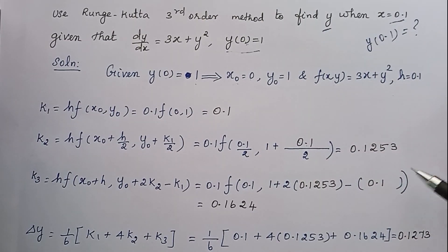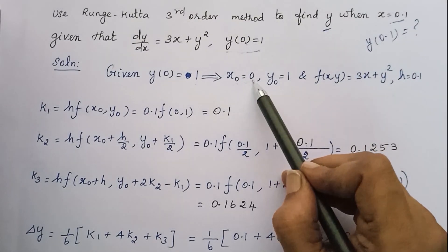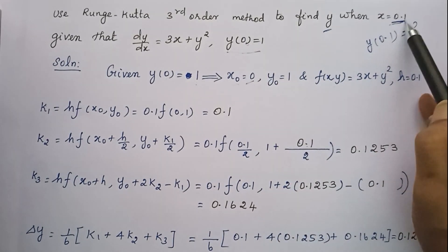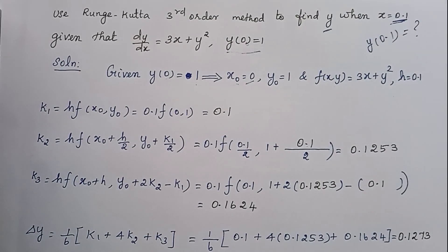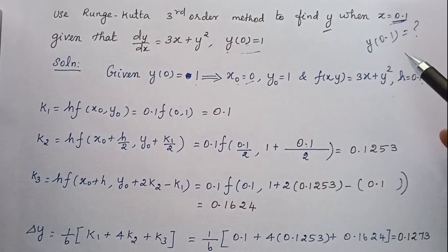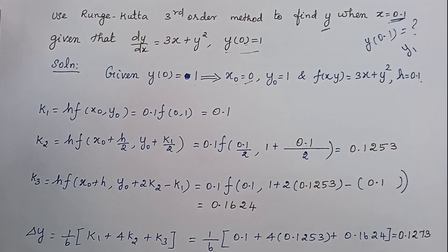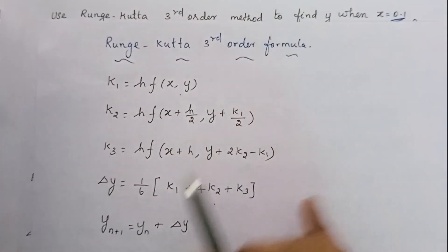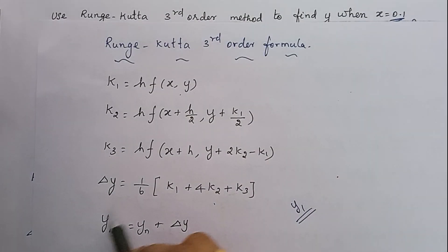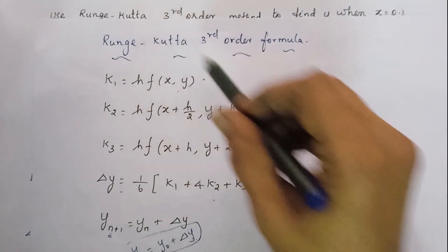We will solve this problem. Getting a third-order Runge-Kutta formula, we need to write the y1 value in this formula. We will substitute the values in this general formula to find y1.